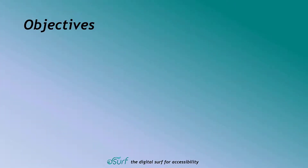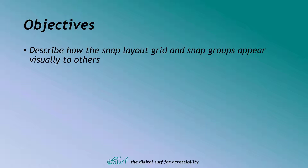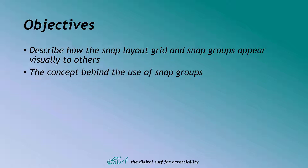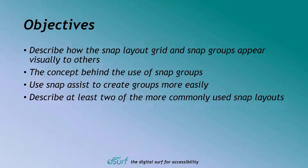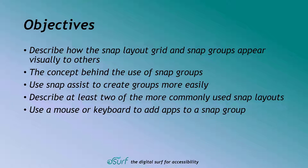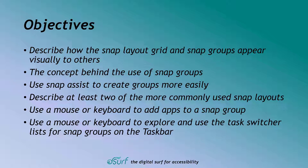Objectives. By the end of this lesson, you will understand, be able to discuss, and/or perform the following tasks: describe how the Snap Layout Grid and Snap Groups appear visually to others; the concept behind the use of Snap Groups; use Snap Assist to create groups more easily; describe at least two commonly used Snap Layouts; use a mouse or keyboard to add apps to a Snap Group; and use a mouse or keyboard to explore the Task Switcher lists for Snap Groups on the taskbar.